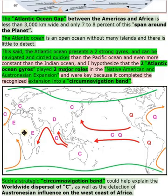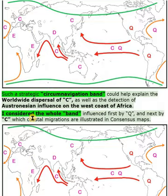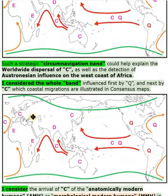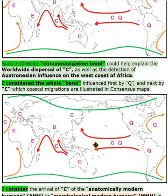Such a strategic circumnavigation band could help explain the worldwide dispersal of sea, as well as the detection of Austronesian influence on the west coast of Africa. I consider the whole band influenced first by haplogroup Q, and next by haplogroup C, whose coastal migrations are illustrated in consensus maps.